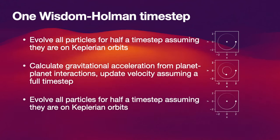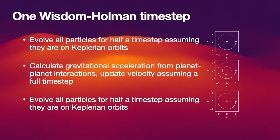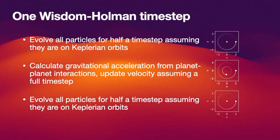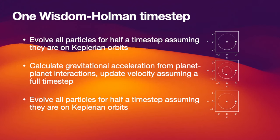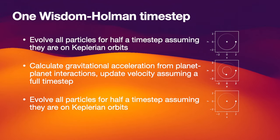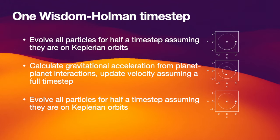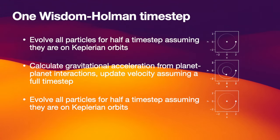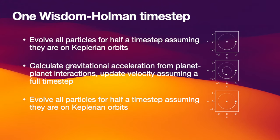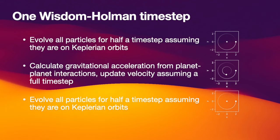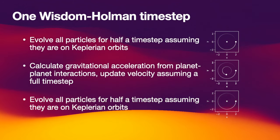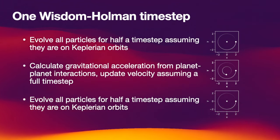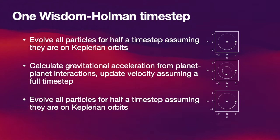So we have a Keplerian orbit, an interaction term, and a Keplerian orbit again. The Keplerian orbits can be solved for all planets separately from each other. It means for n planets, it scales linearly in the number of planets, like O(n). The interaction part, however, scales quadratically because we have to take into account all pairs between planets — so for a large number of planets n, it scales like O(n²). For small planetary systems, the Keplerian drift step will be the time-consuming part. For a large planetary system with many bodies, it will be the interaction part that's limiting the speed.